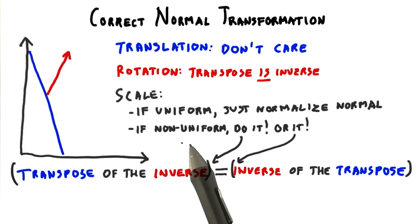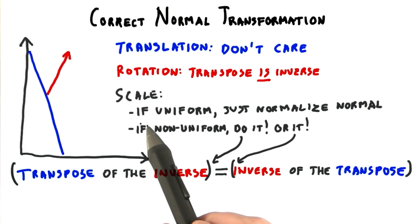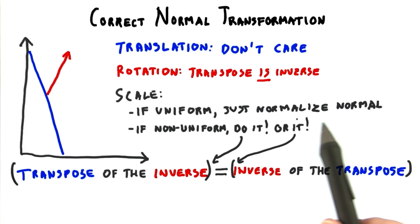Scaling makes it no longer true that the transpose is the inverse, so we have to take special steps. If the scaling matrix is uniform, in other words, the shape of the object doesn't change, we can get away with just normalizing the normals after transforming by the original model matrix.